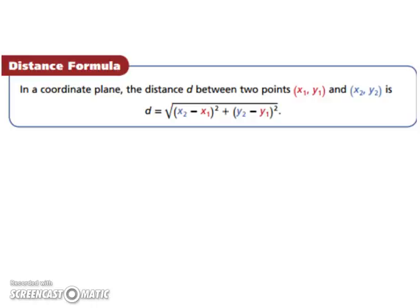Let's look at the distance formula. In a coordinate plane, the distance d between two points (x1, y1) and (x2, y2) is the distance equals the square root of the quantity (x2 - x1)² plus (y2 - y1)².